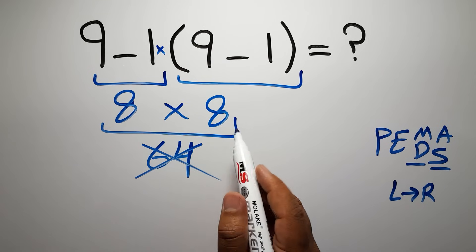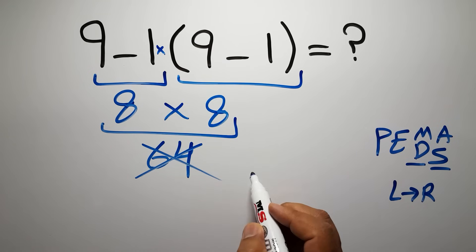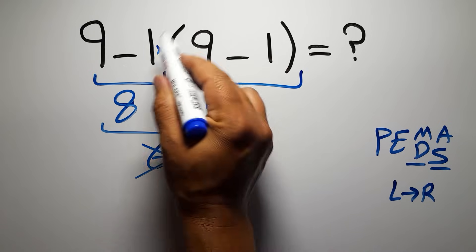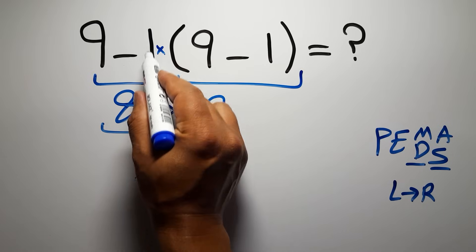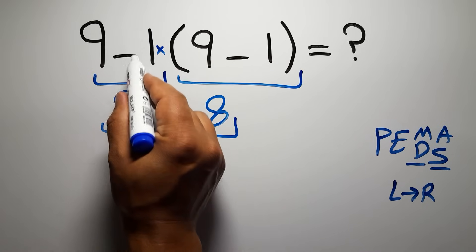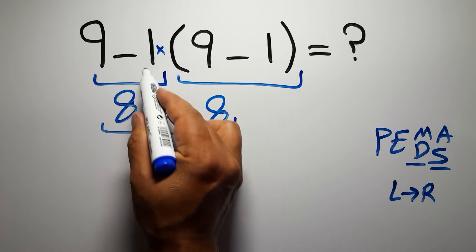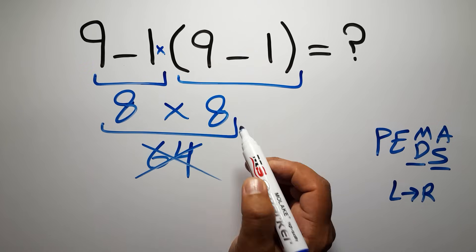So here, according to the PEMDAS, first we have to do this parenthesis, and after this parenthesis, we have to do this multiplication, and finally this subtraction. If you do this subtraction before this multiplication or this parenthesis, it is wrong.